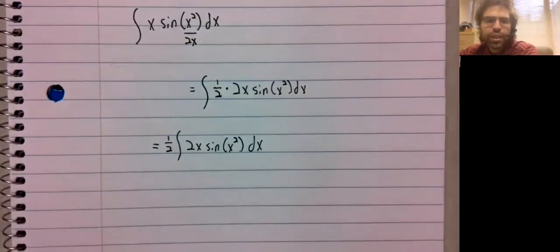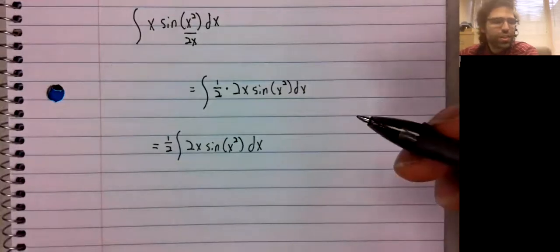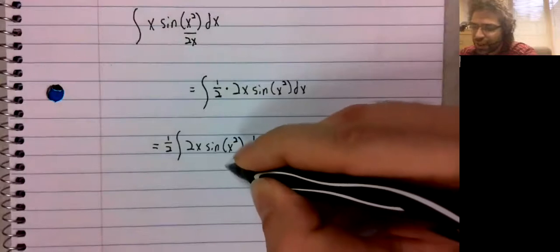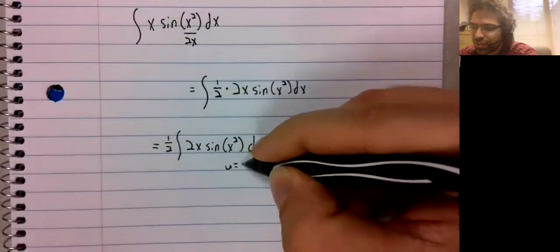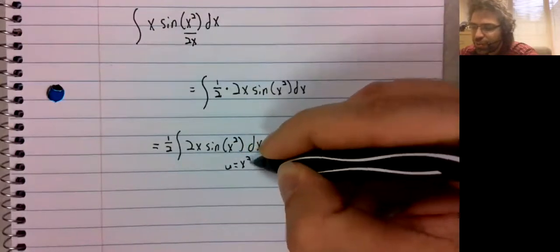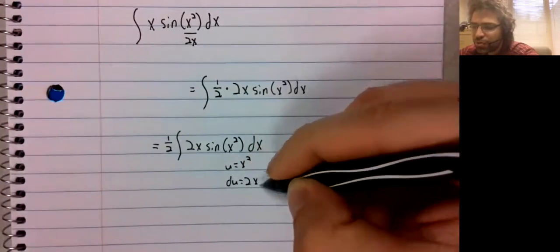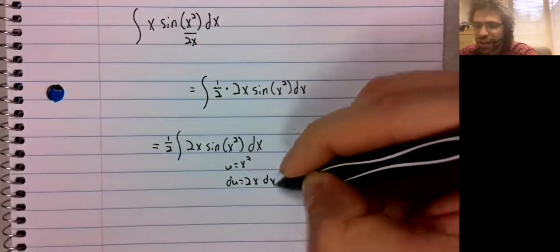And now we can use U-substitution. This was not done purposely, but I see that this is exactly the same example from the last video. So U equals x squared, dU equals 2x dx.